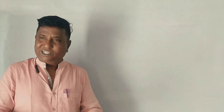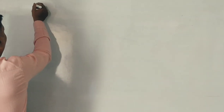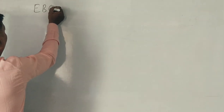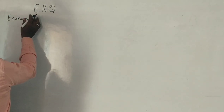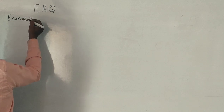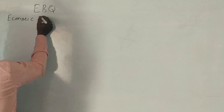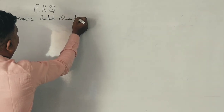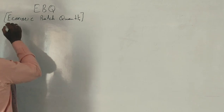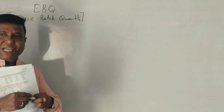First, what is EOQ? EOQ is EBQ. What is EBQ? E, B, and Q — Economic Batch Quantity. Correct? Economic Batch Quantity. On this one's standard, EOQ is the same.